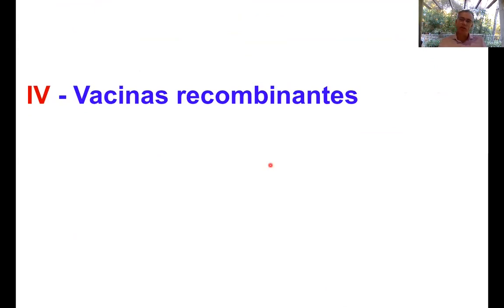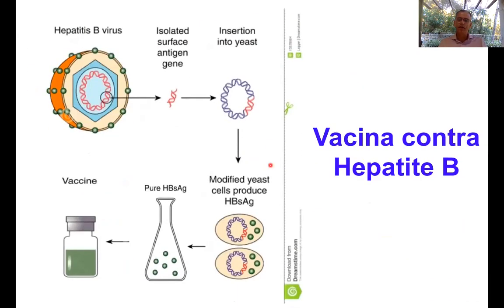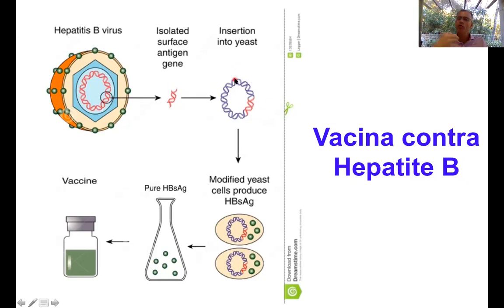Um quarto tipo das vacinas de subunidades são as consideradas vacinas recombinantes. Essas vacinas surgem através da utilização de técnicas de manipulação do DNA e são consideradas uma grande revolução no mundo das vacinas, porque são feitas de uma maneira bastante diferente. A primeira vacina recombinante produzida é a vacina contra a hepatite B, licenciada em 1986. Descobriu-se que uma proteína de superfície do vírus é a proteína mais imunogênica e o candidato vacinal ideal. O gene desse antígeno de superfície do vírus da hepatite B é isolado e clonado dentro de um plasmídeo, colocado dentro de uma levedura.